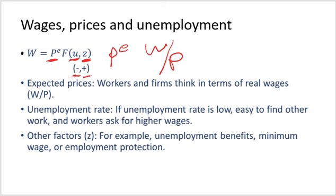The catch-all variable also includes minimum wages and employment protection. An increase in minimum wages leads to an increase in average wages for a given unemployment rate. An increase in employment protection, which makes it expensive for firms to lay off workers, increases workers' bargaining power and therefore their ability to negotiate higher wages.